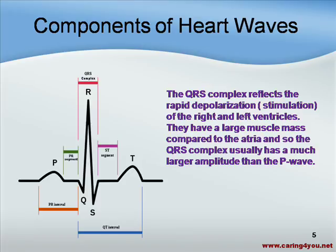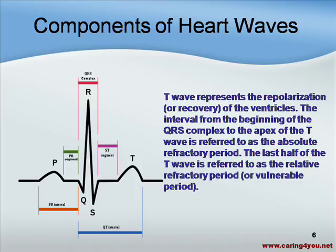The QRS complex reflects the rapid depolarization, or stimulation, of the right and left ventricles. They have a large muscle mass compared to the atrium, so the QRS complex usually has a much larger amplitude than the P wave. The T wave represents the repolarization, or recovery, of the ventricles when the blood leaves the ventricle. The interval from the beginning of the QRS complex to the apex of the T wave is the absolute refractory period. The last half of the T wave is the relative refractory period, or the vulnerable period.